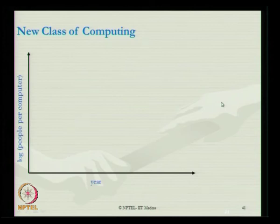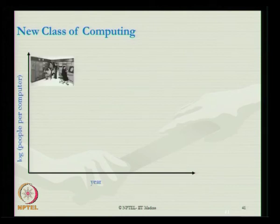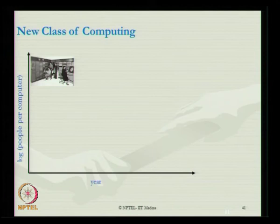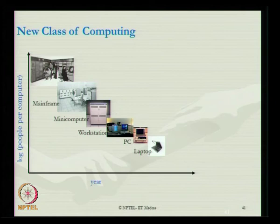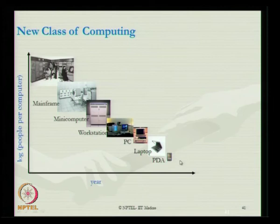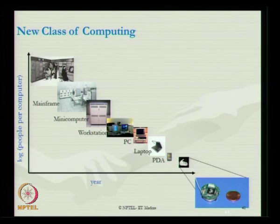Once data is received from the network, how do we analyze it? Looking at the evolution of computing: it moved from mainframes to mini computers to workstations to PCs to laptops and now to PDAs. The chip or system architecture should be as minimal and as light as possible while sufficient to hold data — as seen in a microchip small enough to hold in a human thumb.